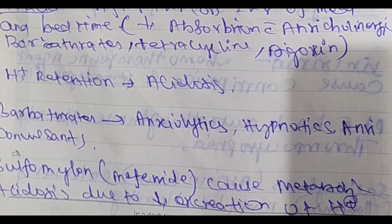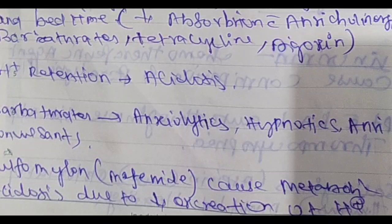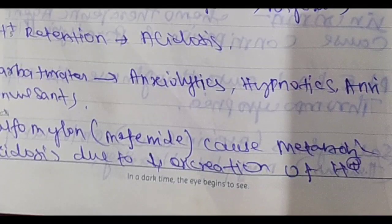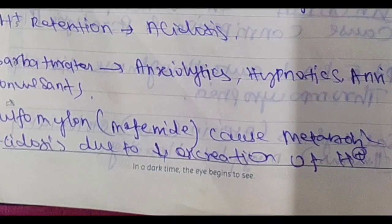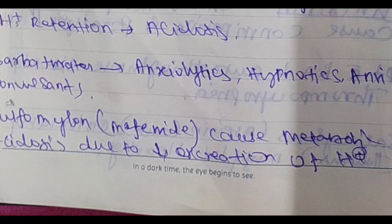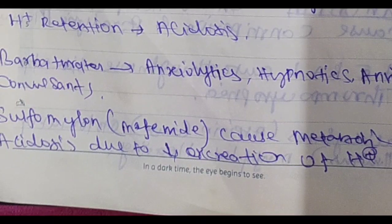Hydrogen ion retention causes acidosis; hydrogen ion loss causes alkalosis. Sulfamylon — mafenide — causes metabolic acidosis due to decreased excretion of hydrogen ions. So hydrogen ion retention equals acidosis — that is the concept of sulfamylon.